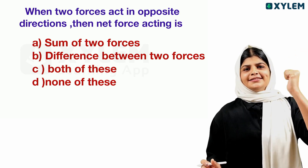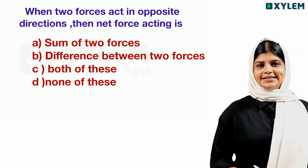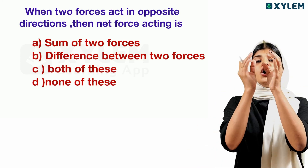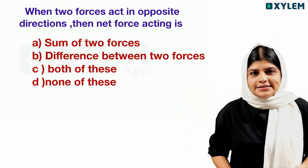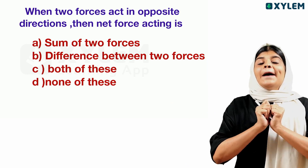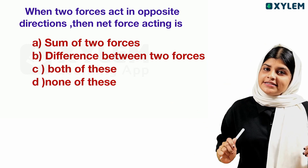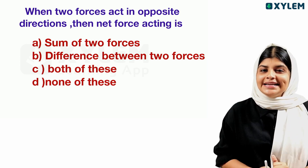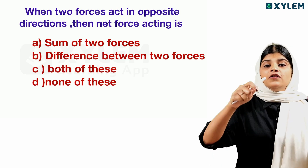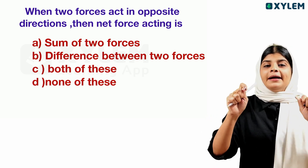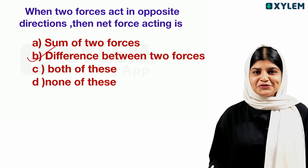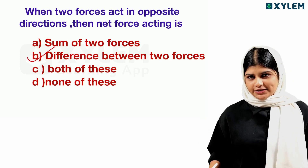In an object, you can apply forces in an opposite direction. That means the total force is the difference — the forces are applied as a minus. The net force, or total force, is the difference between the two forces applied in opposite directions.